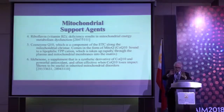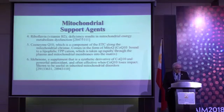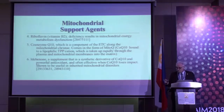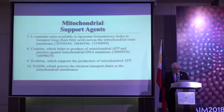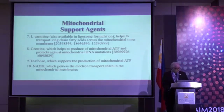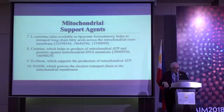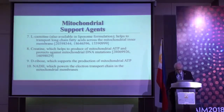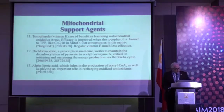Coenzyme Q10 is an actual component of the electron transport chain along the mitochondrial cristae. There is also idebenone, a synthetic derivative of CoQ10 and a very powerful antioxidant that has been used specifically to deal with inherited mitochondrial diseases by lessening oxidative stress in the mitochondria. L-carnitine, creatine, D-ribose, and NADH are also important — NADH really powers the process and pushes the electron transport chain to completion.